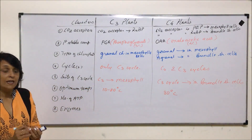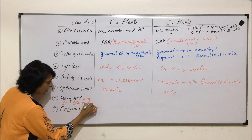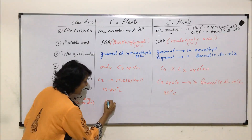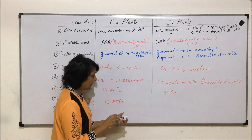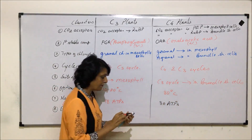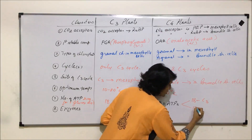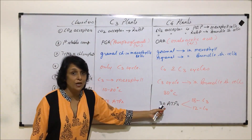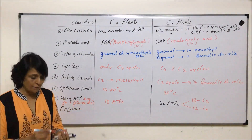The number of ATPs required to synthesize one glucose molecule: in the C3 cycle, 18 ATPs are required. In C4 plants, 30 ATPs are required in total — 18 during the C3 cycle and 12 during the extra C4 pathway. So C3 plants require 18 ATPs whereas C4 plants require 30, making C4 a more energy-expensive process.